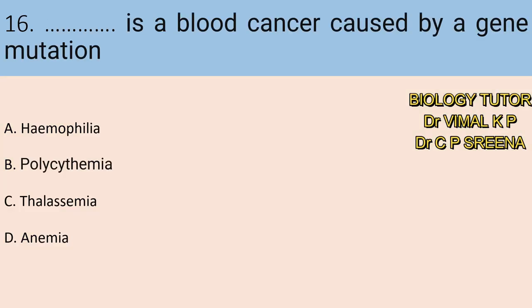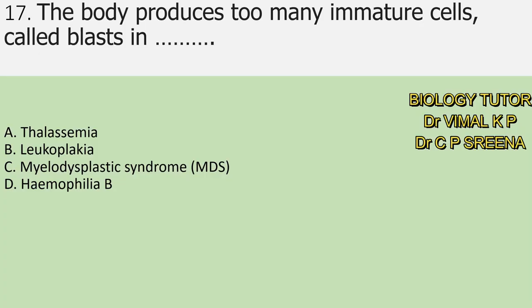Sixteenth question: dash is a blood cancer caused by a gene mutation. A. Haemophilia, B. Polycythemia, C. Thalassemia, D. Anemia. Here answer is B — Polycythemia.